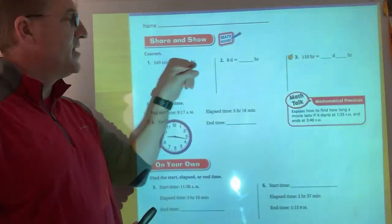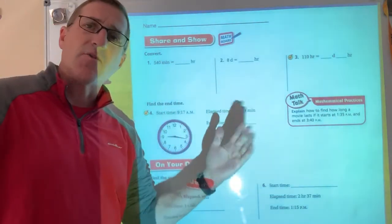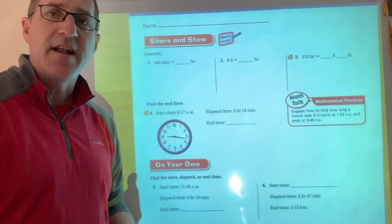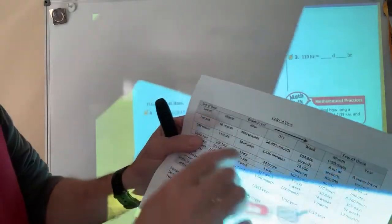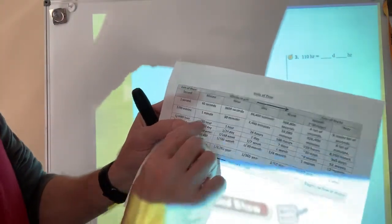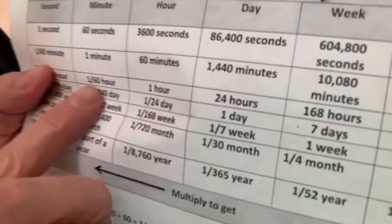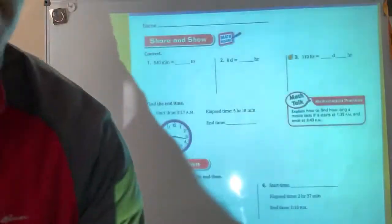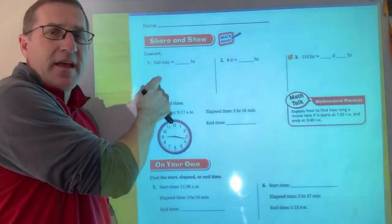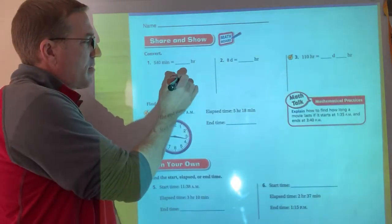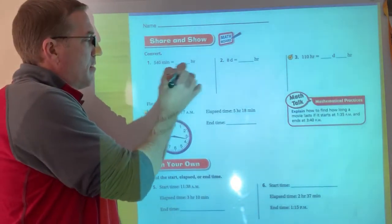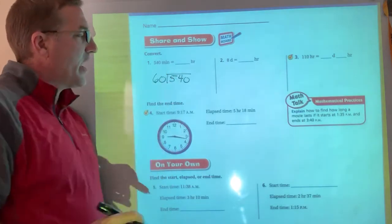So the first top part is easy. This is just time conversion. So all I got to do is I have to look at my chart in order to get this. So if I look at my chart, I'm going from minutes to hours. Hours are bigger, so I need fewer of them. I know I'm going to divide.